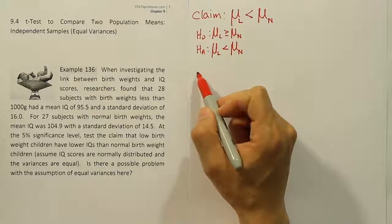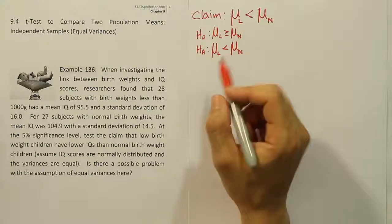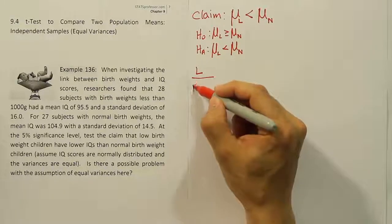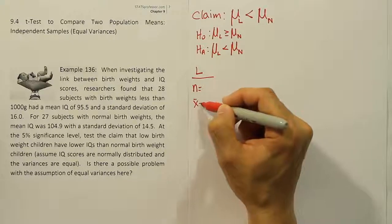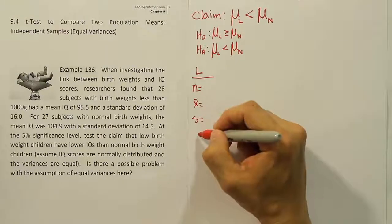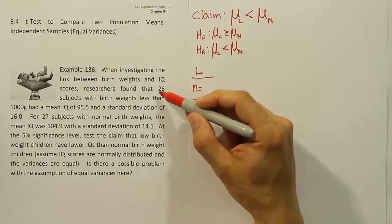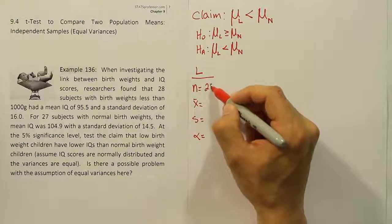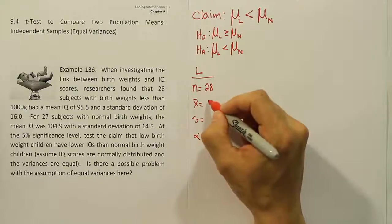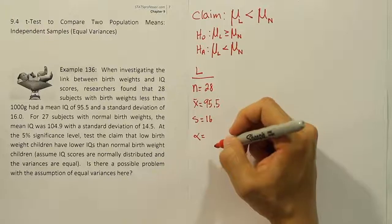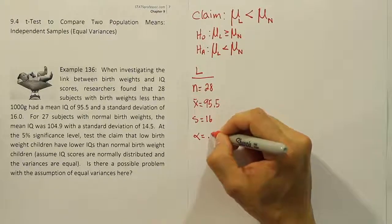Let's begin to put down the data. Because I have low birth weight children first here, I'm going to put my data in that order as well. So I'm going to get the sample size for low birth weight children, the sample mean, the standard deviation, and I'll have an alpha in the problem that I'll record. So for low birth weight children, they had a sample size of 28. And among that group, the sample mean IQ was 95.5. The standard deviation was 16.0. The alpha is 5% in the problem.